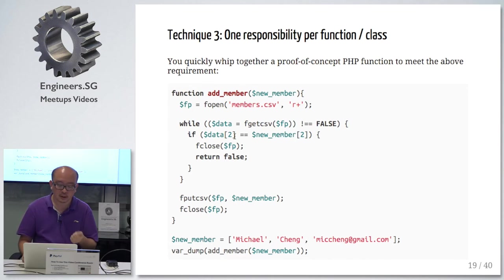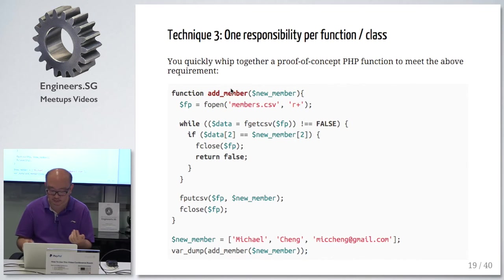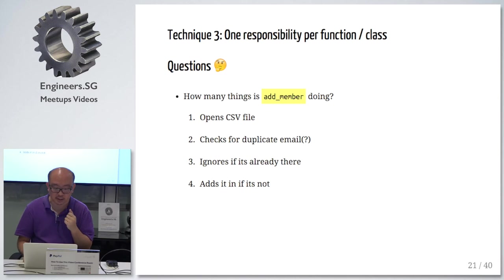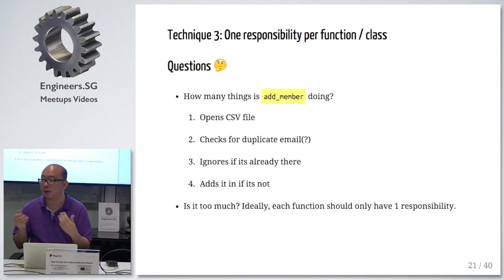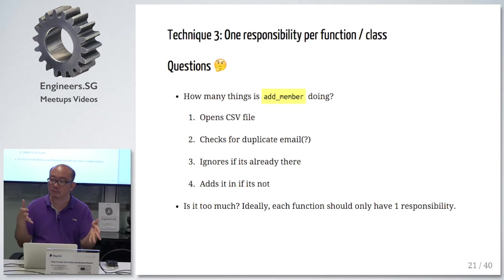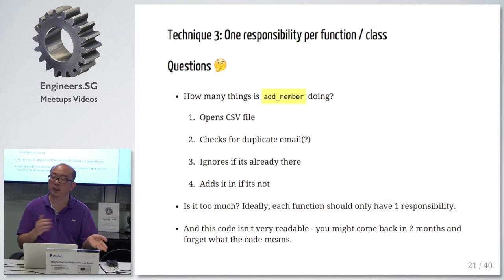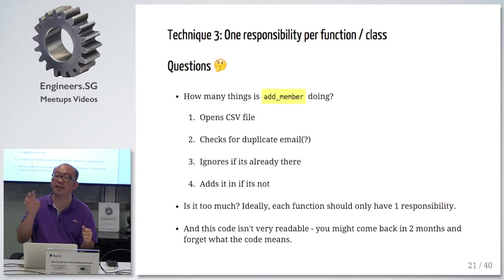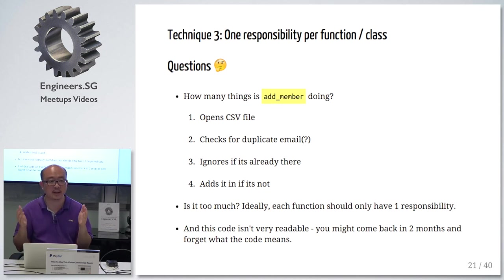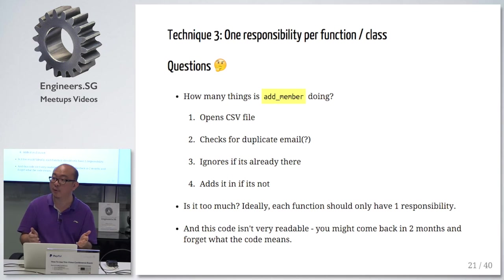So it's doing too much. There's a lot of things for one function to do. Of course, if you're rushed for time, you probably just walk away and say, it works. But it irks me when I read back this file — what does this even mean? Why is this position number two? It's like, huh? The only thing that makes sense is the function name, add member — but it's doing quite a few other things. It is disconcerting. Ideally, each function should only have one responsibility, only do one thing.